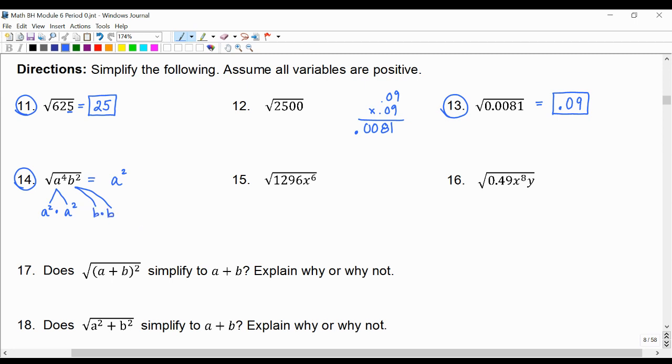And b squared is also a perfect square because b times b is b squared, which means that the square root of b squared would be just b. So we have a squared b.